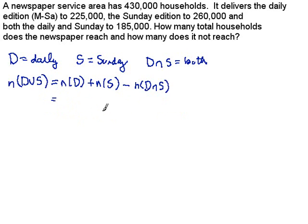Because it's set up this way, the number of daily subscribers is 225. Let me not write all the zeros for the thousands. What about the Sunday edition? The Sunday edition goes to 260, so I add 260 there. And then we saw there was 185 that got both. So we just have to tally up this. If I take 225 and subtract 185 from it, that's going to leave me 40. So 40 plus 260 is going to come out to be 300.